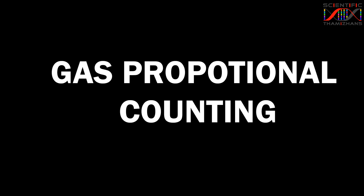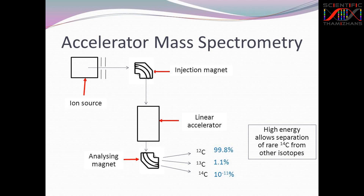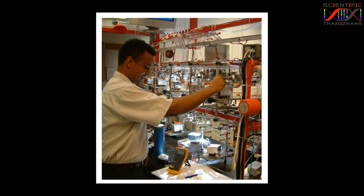The third method is accelerator mass spectrometry, or AMS. In this method, carbon-14 elements are counted directly. It is the most advanced method. A company called Beta Analytic in America uses AMS for radiocarbon dating.